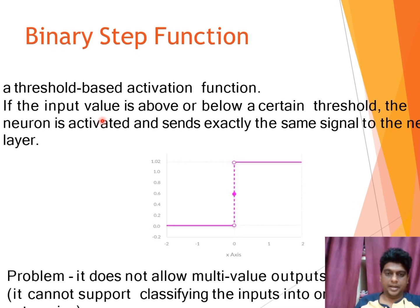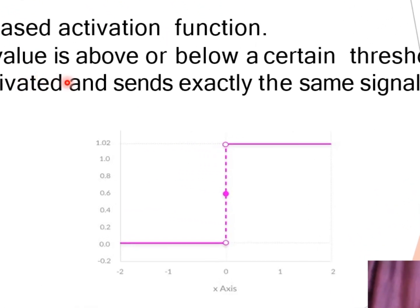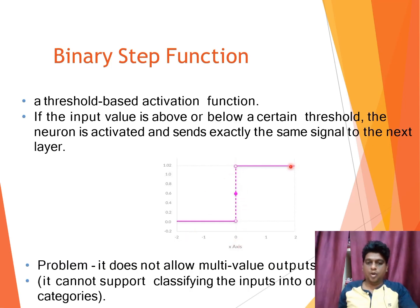The first type the binary step activation. It is a thresholding based method. If the incoming input is above the threshold means automatically it takes the input or else it rejects the input and make it a 0. It does not allow a multiple value outputs. Cannot support classifying the inputs into one or more categories.